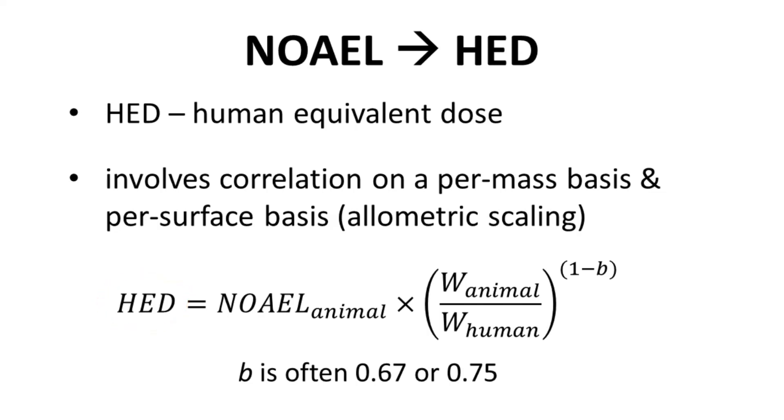NOAEL has units of milligrams drug per kilogram of animal mass. W is the weight of the animal or human, normally in kilograms. The exponential term is the allometric scaling term. Common values of B are 0.67 or 0.75. The units of HED are milligrams of drug per kilogram of human subject mass.